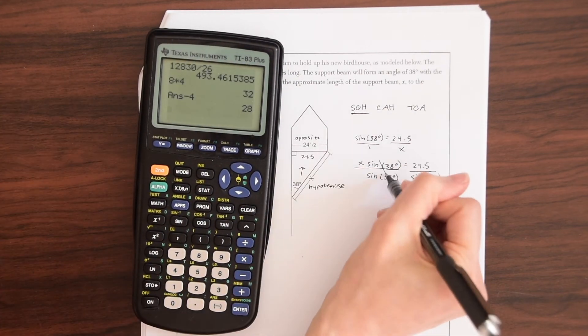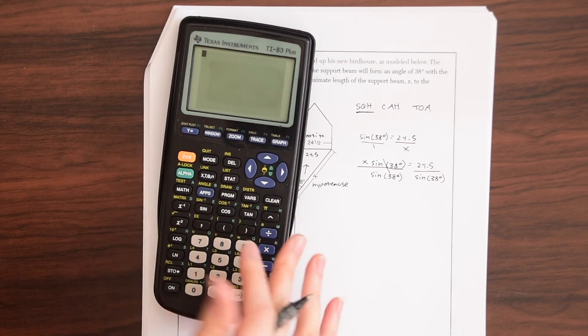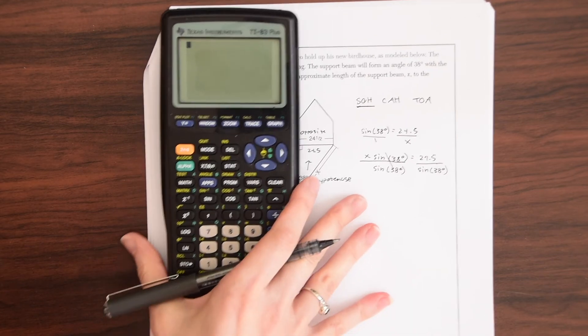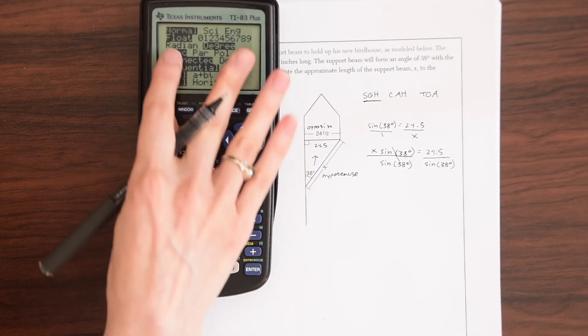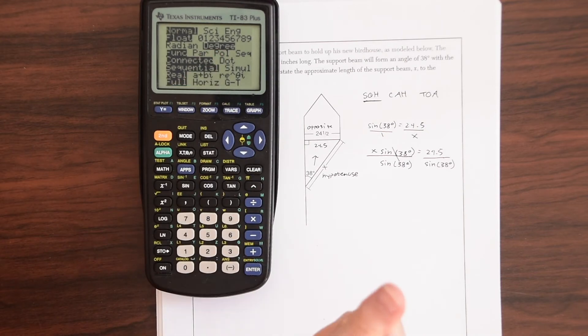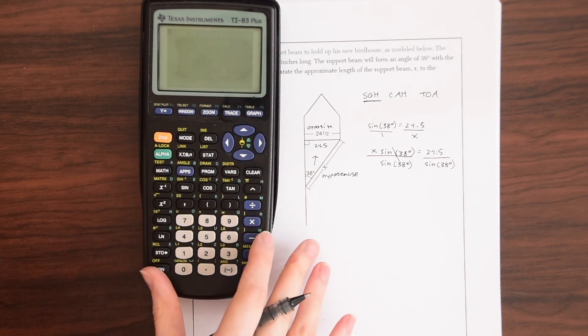So to find this value, we're just going to take our calculators. And before you do any calculations, just make sure that you're in degree mode. So we go to mode and then you see we're in degree mode. So we are good to go.